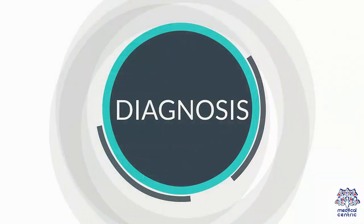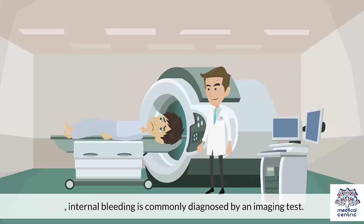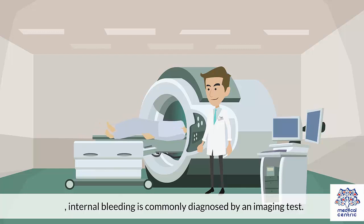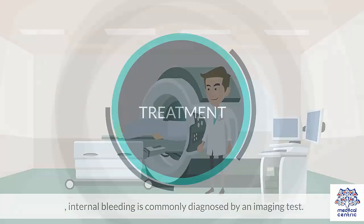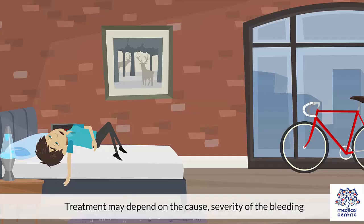Diagnosis: External bleeding can be diagnosed just by looking at the site of bleeding. Internal bleeding is commonly diagnosed by an imaging test. Treatment may depend on the cause and severity of the bleeding.